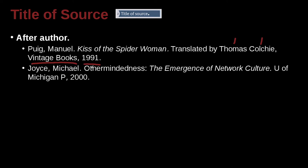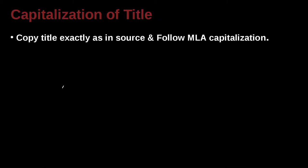Actually, 'The Emergence of Network Culture' should also be italicized, since this is the name of a book. It's from University of Michigan Press — 'P' meaning Press. That is one of the abbreviations MLA allows you to use.